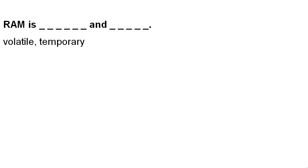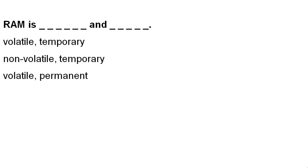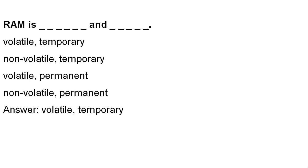RAM is dash and dash. Options: Volatile and Temporary, Non-volatile and Temporary, Volatile and Permanent, or Non-volatile and Permanent? The correct option is RAM is Volatile and Temporary.